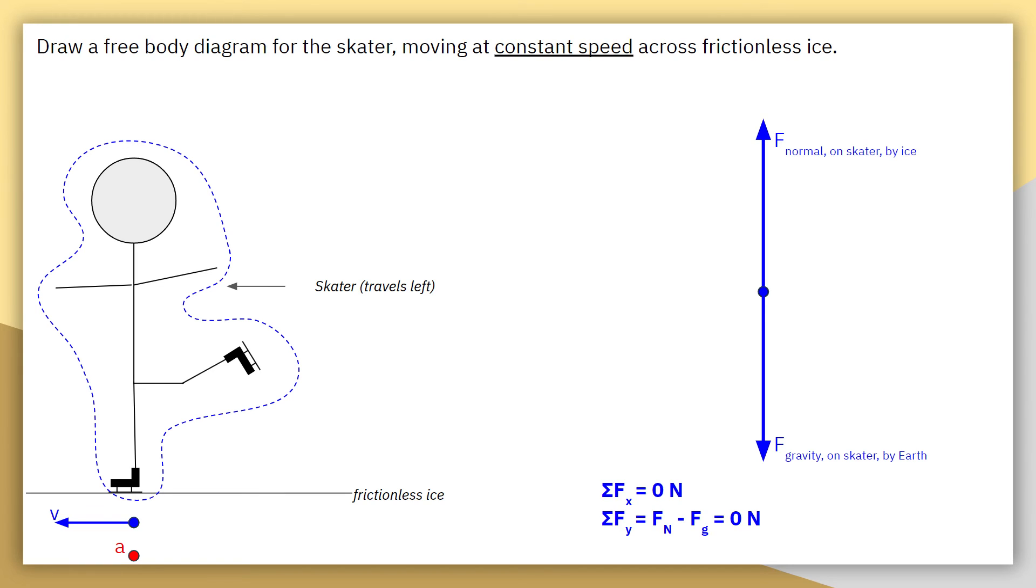Sum of the force vertically, on the y-axis, we have two forces. We have force normal pointing up and we have force gravity pointing down. That's why in the summation equation, they're going to be interacting with each other, but in opposite directions. Hence, positive force normal, negative force gravity. Because when we take the amount of force up and we combine it with the amount of force down, we would expect to see zero newtons of force overall, which is necessary to have zero acceleration.